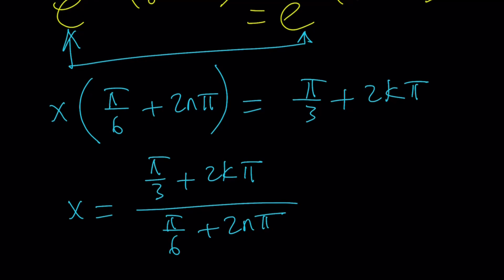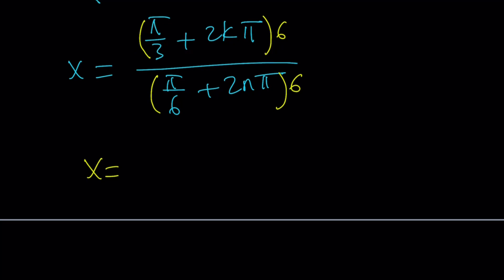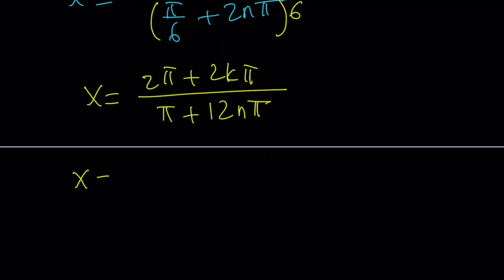Let's get it done. So here's what I'm going to do. I'm going to make a common denominator. And this might be helpful, multiplying the top and the bottom by 6. Let's go ahead and do it. Because it looks like 6 is going to eliminate all the fractions. And if you do that, x is going to become, when I distribute the 6, it's going to be 2π plus 2kπ - sorry, I mean 12kπ - divided by π plus 12nπ.